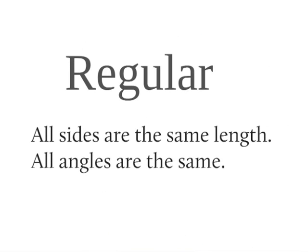Now, we can split each family down into two groups. We can either split polygons into regular polygons. And that means that all the sides on the shape are the same length. And all the angles in the shape are the same size.